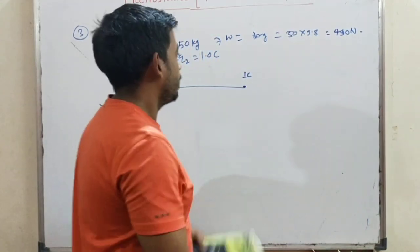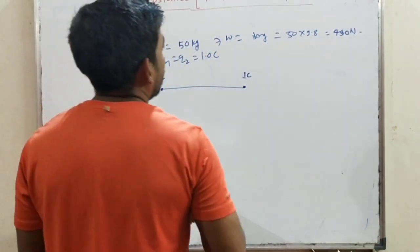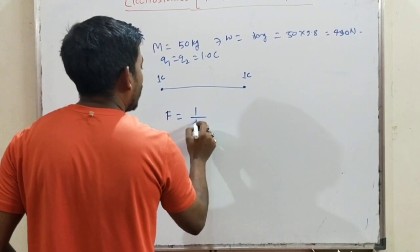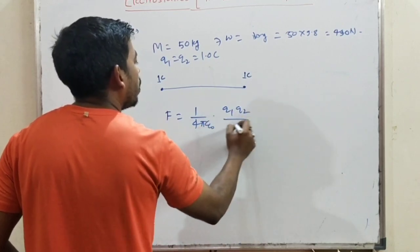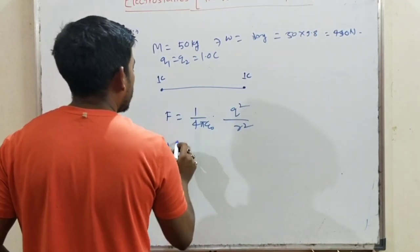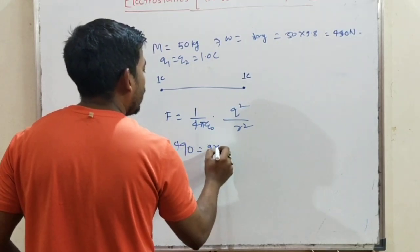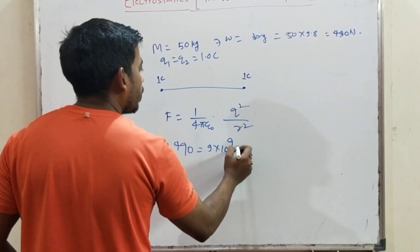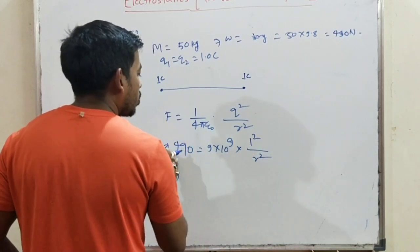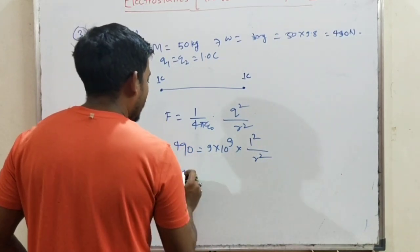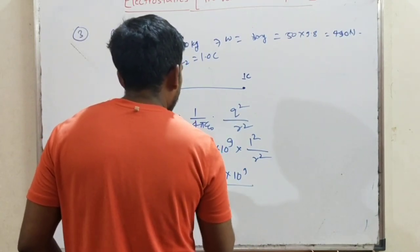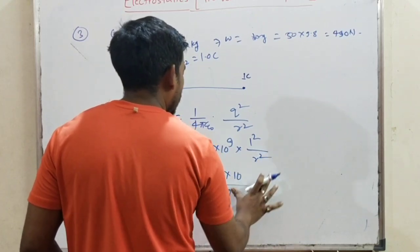Force is given as 490 Newton. Using F = (1/4πε₀) × Q1·Q2 / r². Since both charges are equal, Q1 = Q2 = Q, so force = 9×10⁹ × Q² / r². Setting this equal to 490 Newton: Q² = 490 / (9×10⁹ × r²).